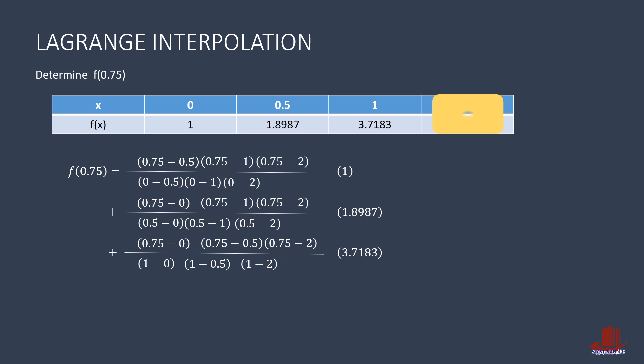With the last data point covered, the fourth term comes with the numerator as 0.75 minus 0 times 0.75 minus 0.5 times 0.75 minus 1. The denominator has 2 minus 0, 2 minus 0.5 and 2 minus 1 with the difference of y as 11.3891.